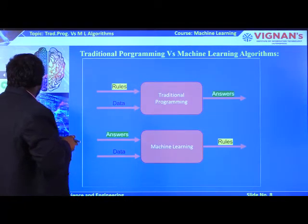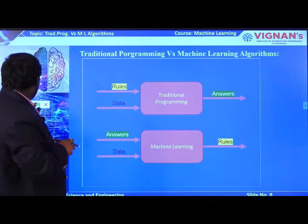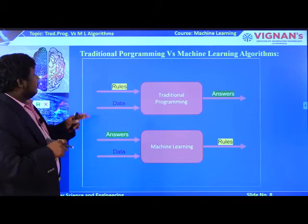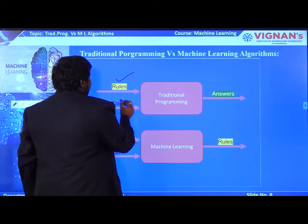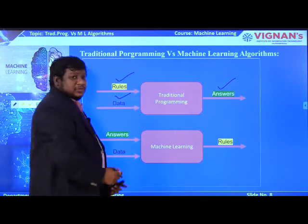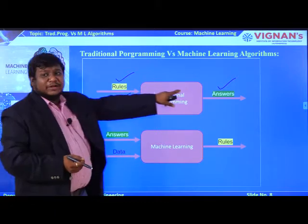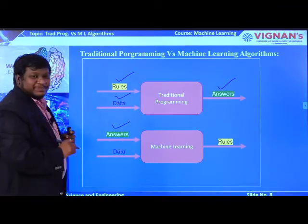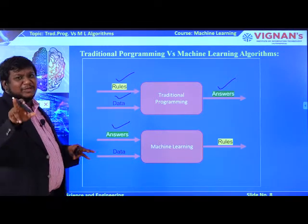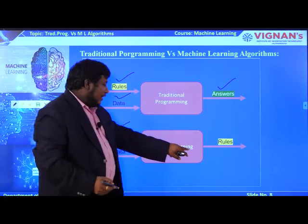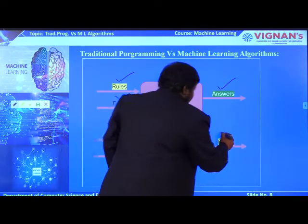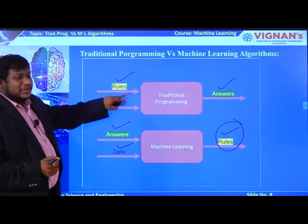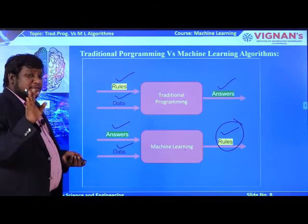In the traditional programming model, you give rules as input and data as input and you get answers. In the machine learning model, you give answers and data as input and you get rules as output. By using these rules you then solve the problem. This example is related to the decision tree model, where the machine learning model works to generate rules.